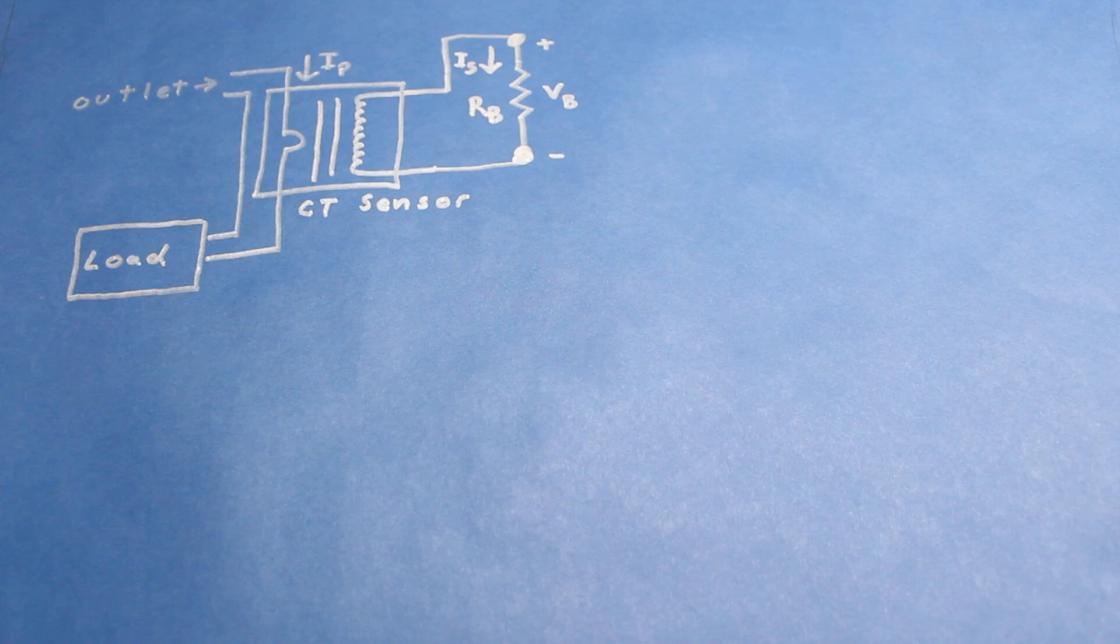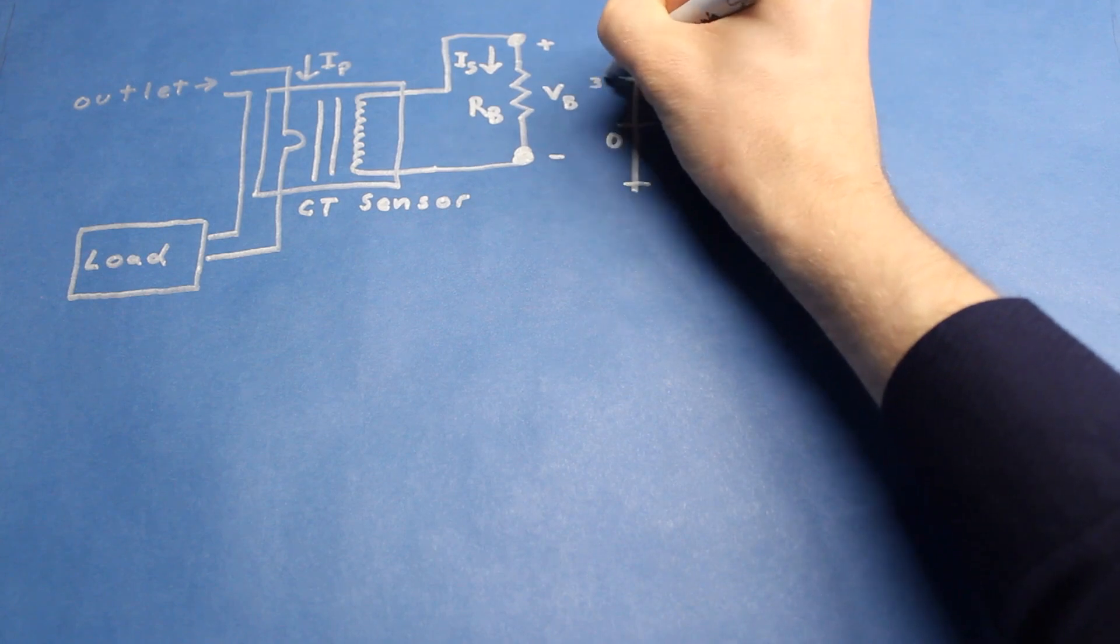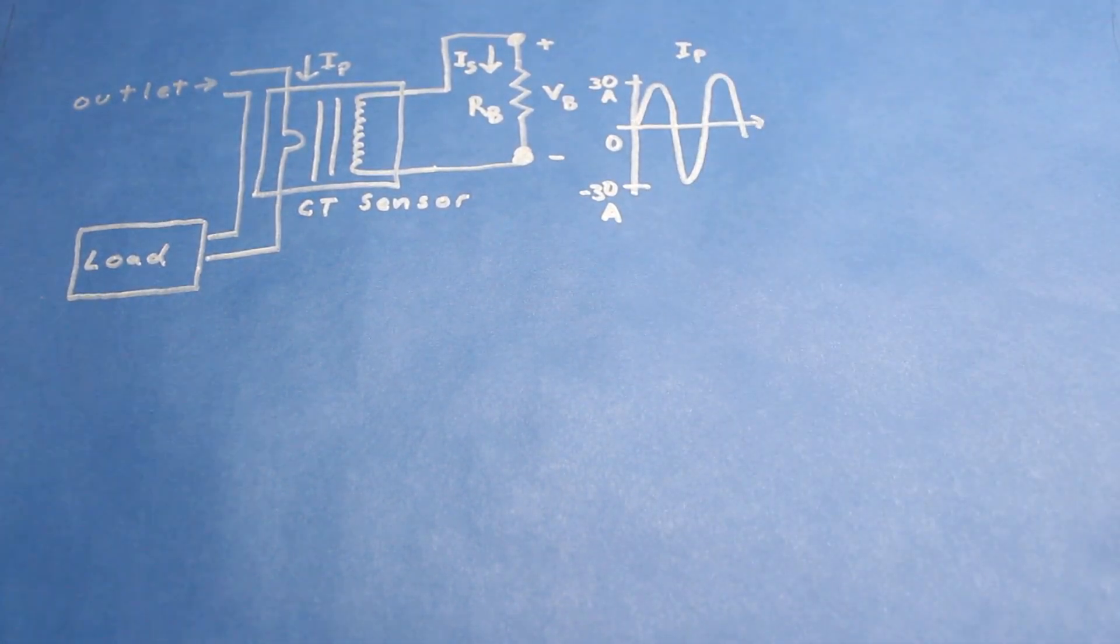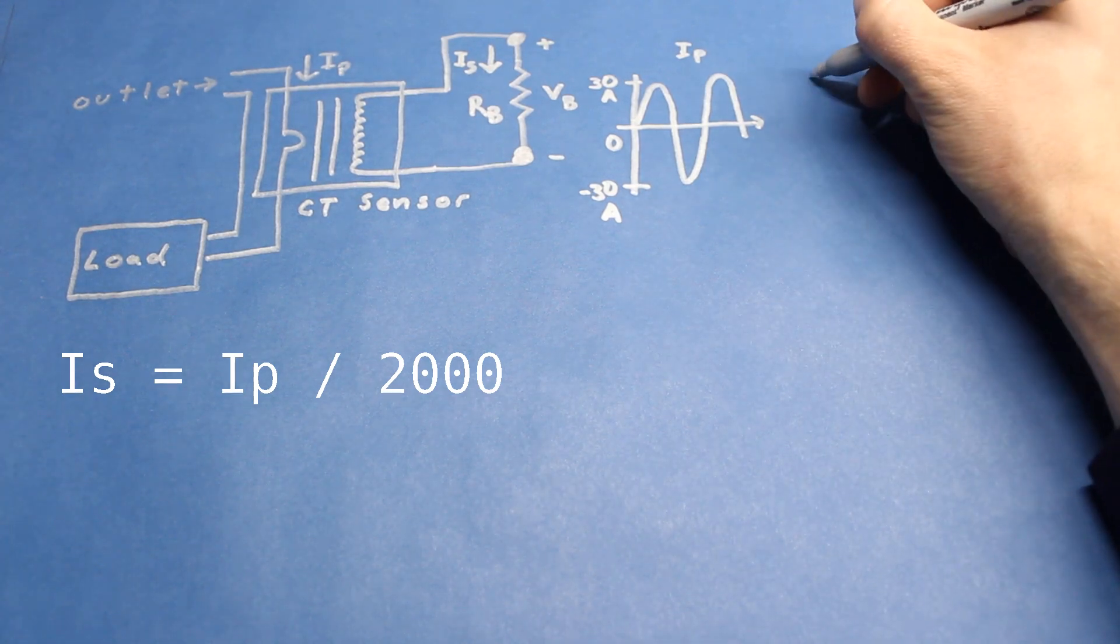Also I'll abbreviate analog-to-digital as ADC. From the datasheet for the CT sensor, we know that it can sense up to 30 amps. We'll assume that's the amplitude of the alternating current, which we'll call the primary current or IP. We'll call the output current IS for secondary current, and that is equal to IP divided by the number of secondary windings, 2000 in this case.